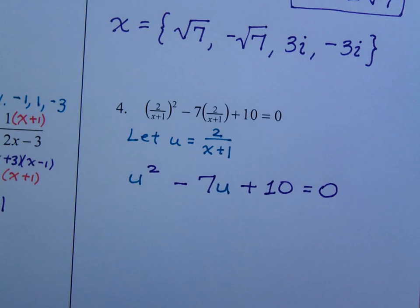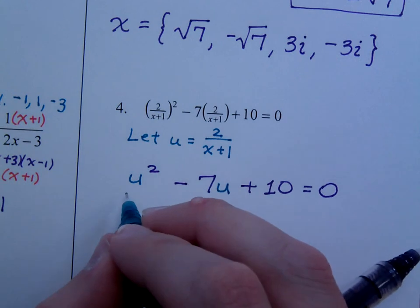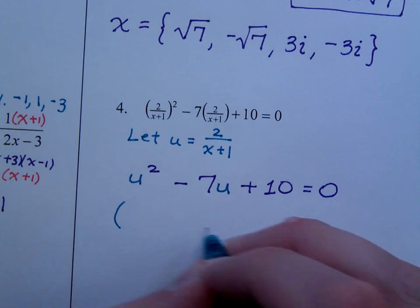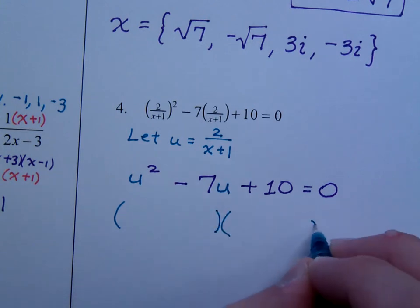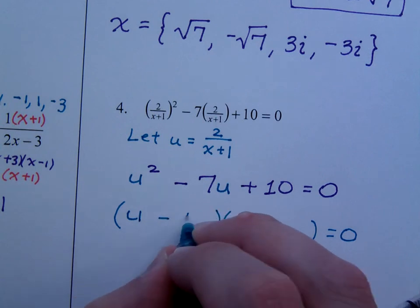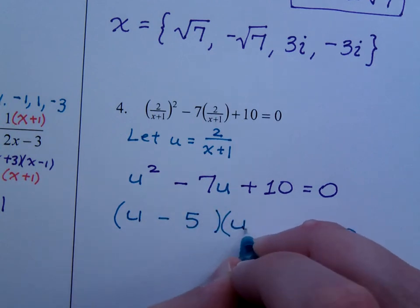When I make that substitution, I end up with an equation that's a lot easier to work with. This substitution of u being equal to 2 over x plus 1 is going to get used later on in this problem. But right now, we have a nice trinomial that factors. This guy factors as u minus 5 times u minus 2.